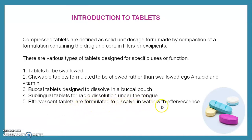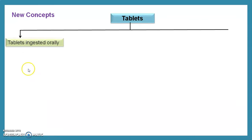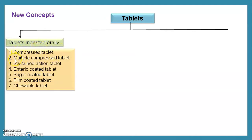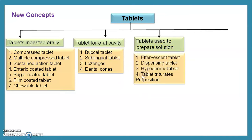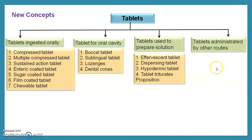Effervescent tablets are formulated to dissolve in water with effervescence. Tablets are categorized on the basis of their use. First: tablets ingested orally — compressed tablets, multiple compressed tablets, sustained-action tablets, enteric coated tablets, sugar coated tablets, film coated tablets, and chewable tablets. Next: tablets for the oral cavity — buccal tablets, sublingual tablets, lozenges, dental cones. Tablets used to prepare a solution: effervescent tablets, dispensing tablets, hypodermic tablets, tablet triturates. Lastly, tablets administered by other routes: implantation tablets and vaginal tablets.